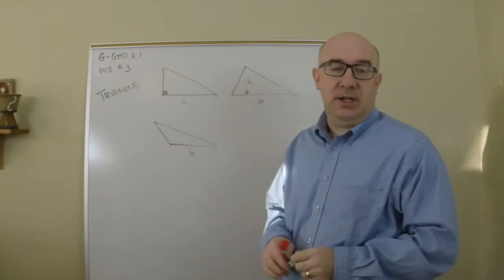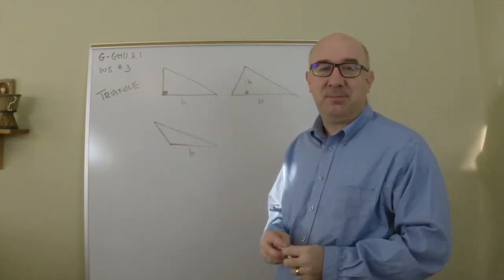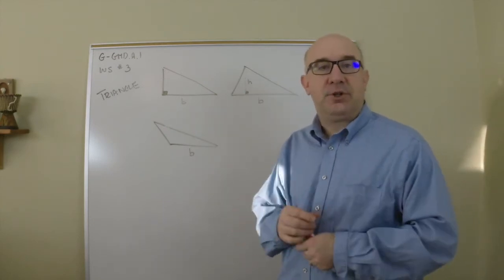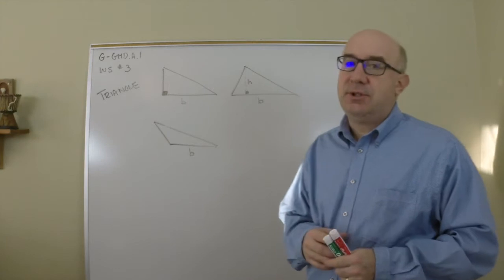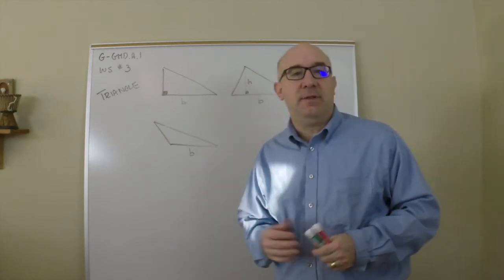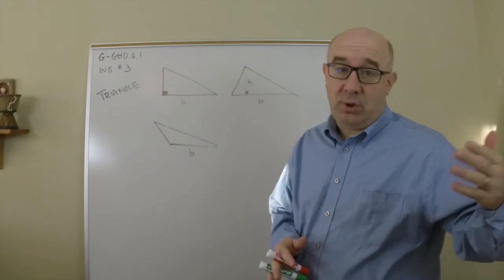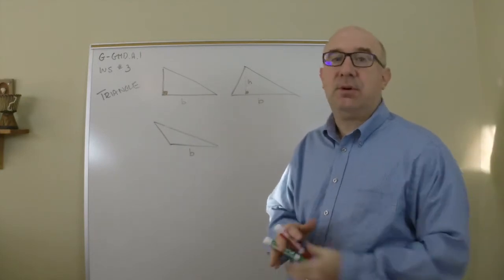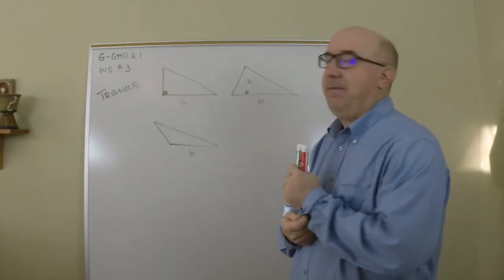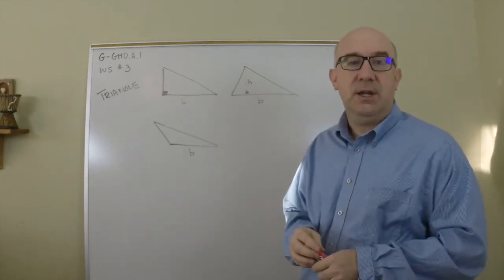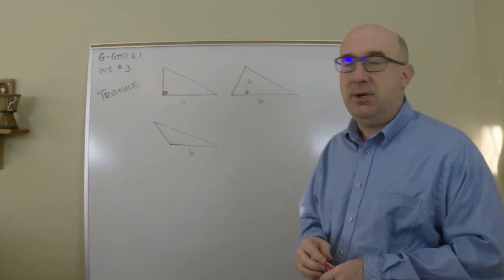All right, let's continue on GGMD A1. This is worksheet three, the development of the formula for a triangle. Most students know the formula of a triangle, obviously this is early objective stuff, earlier common core objectives in like eighth or earlier grades, but again I felt it just essential to cover a good basis of this on our way through the geometric measurement and dimension unit.